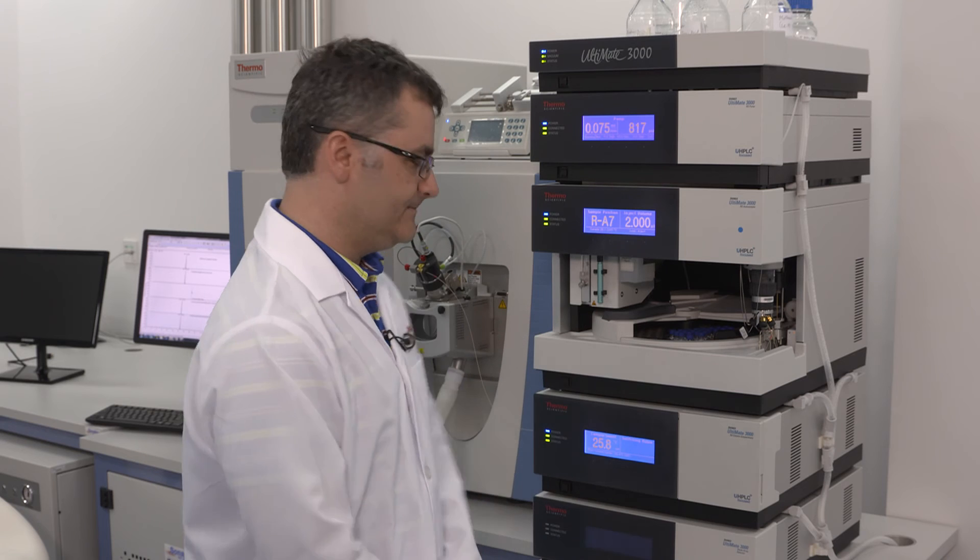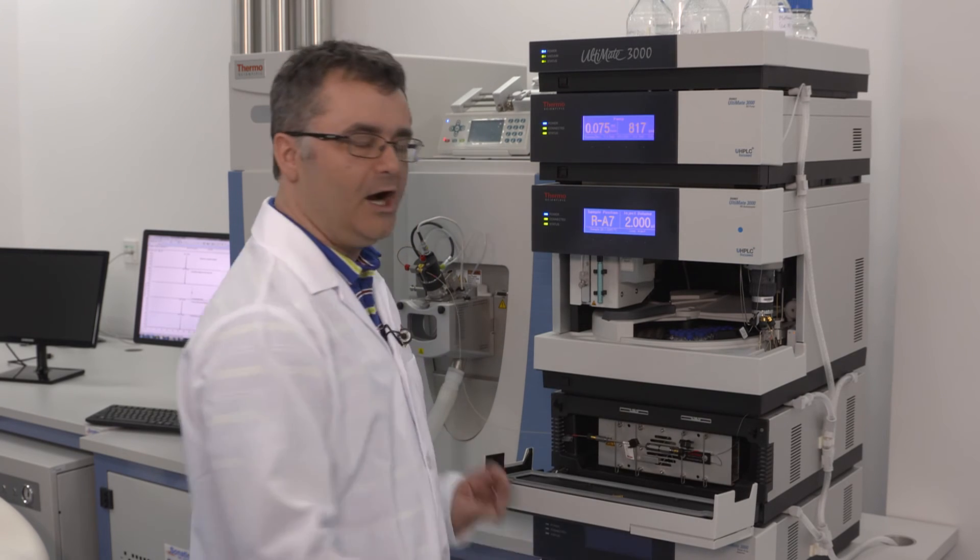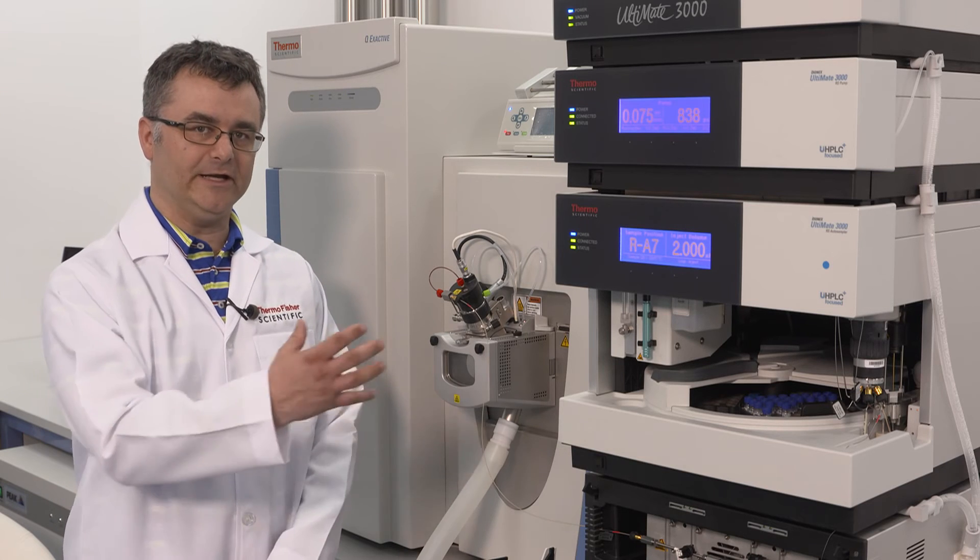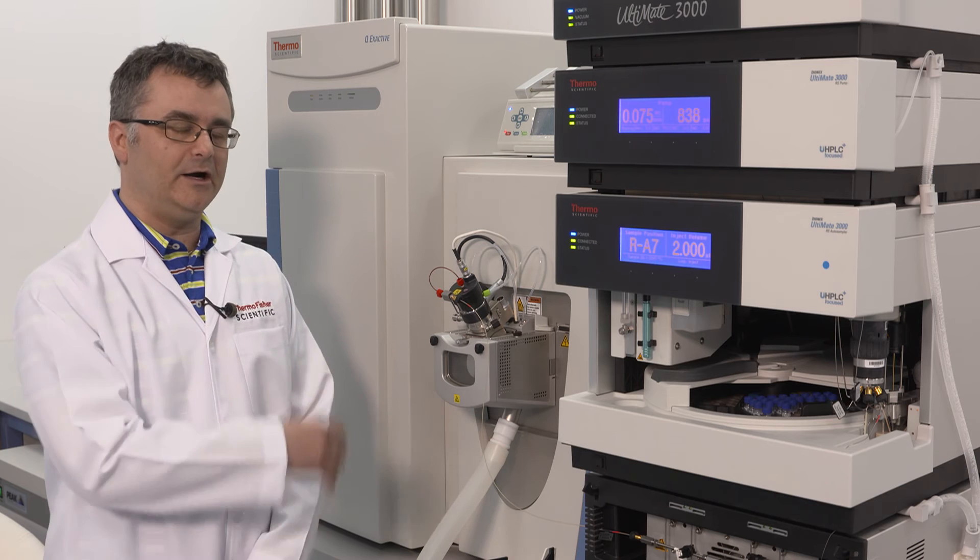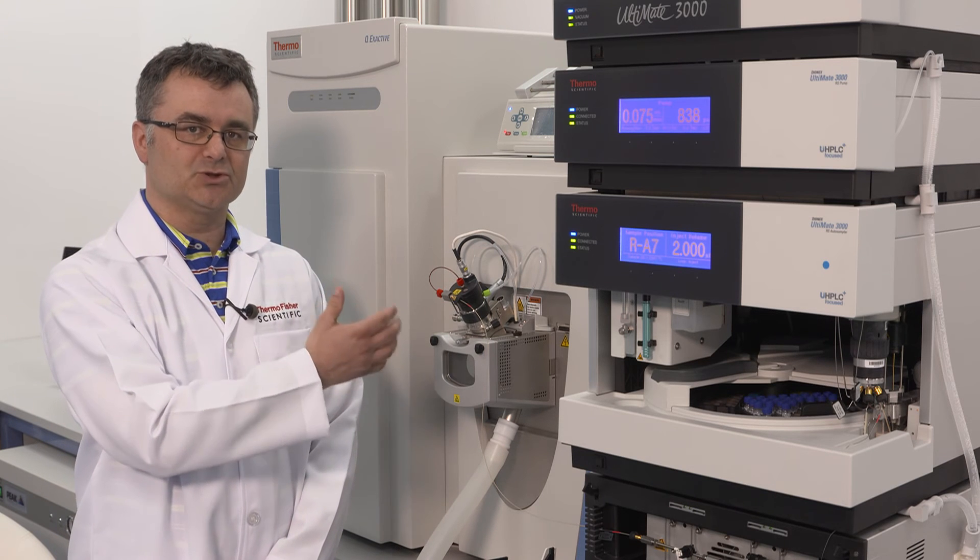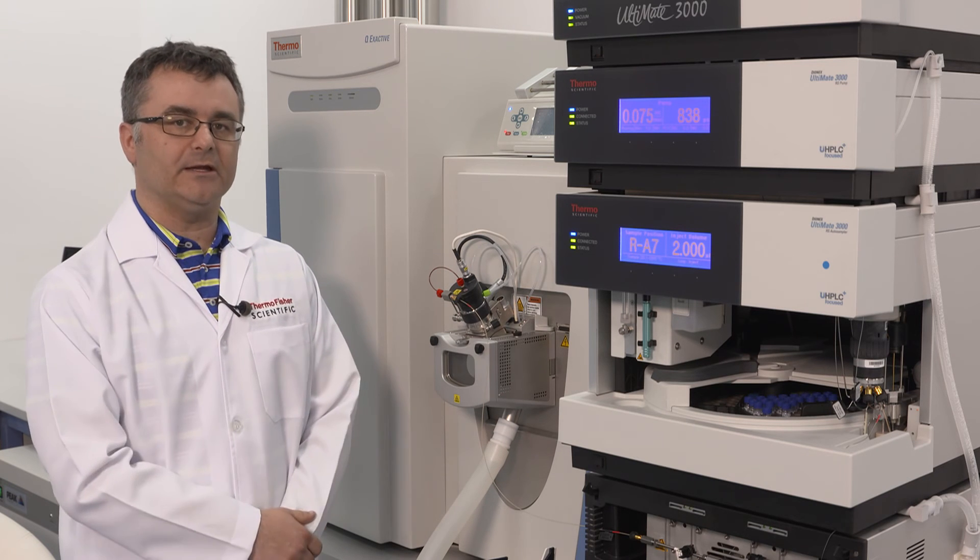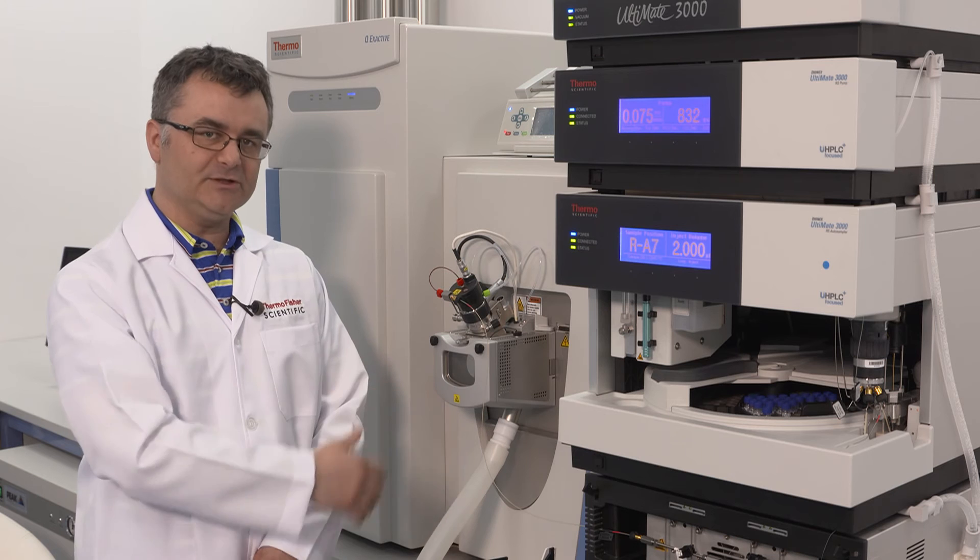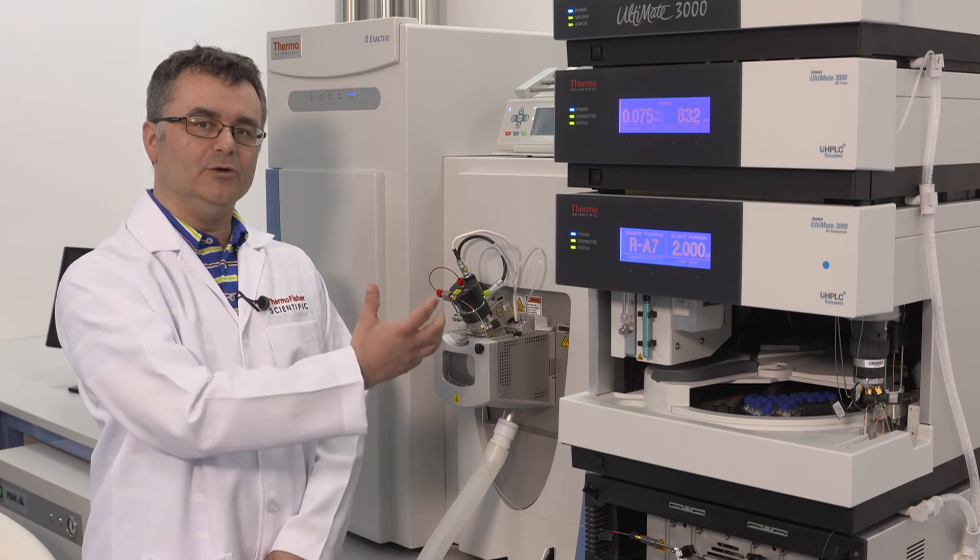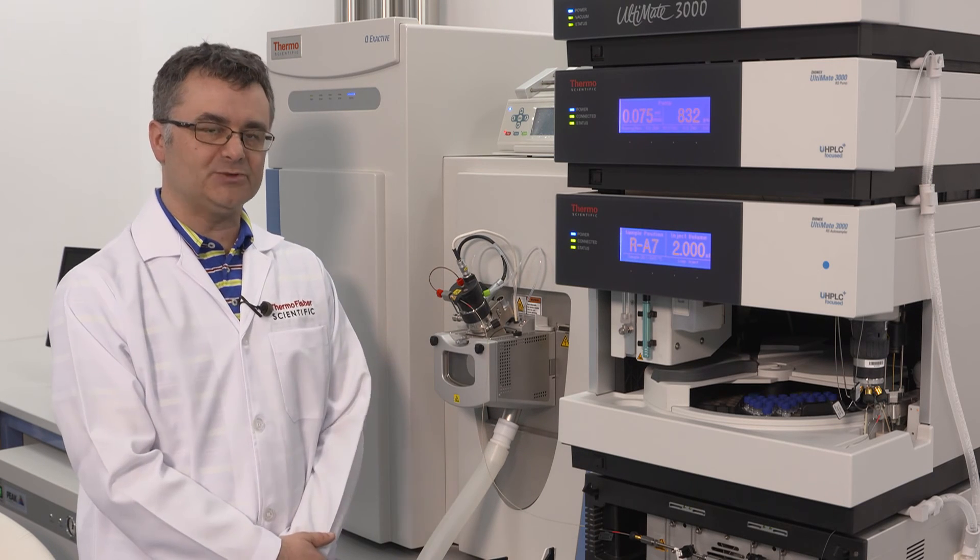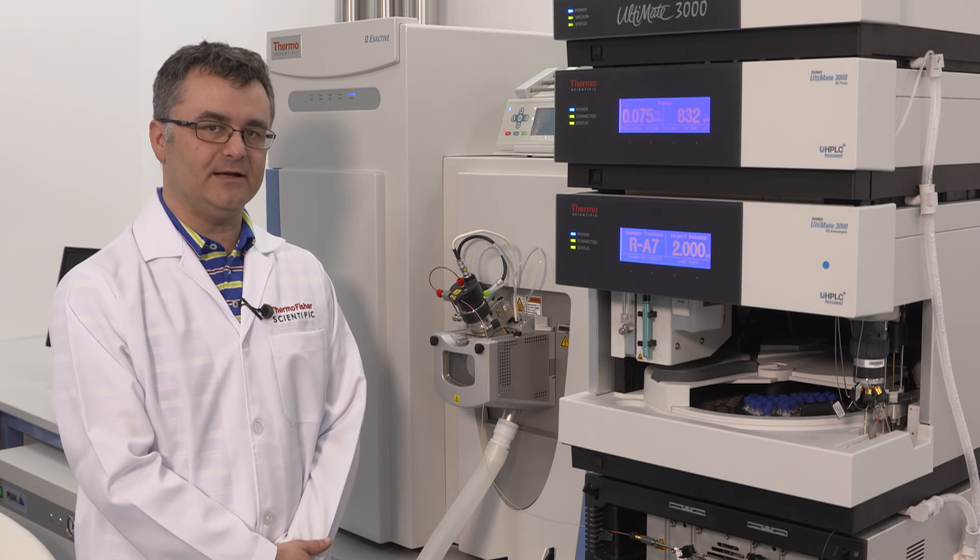Two microliters of the sample are injected. Peptides are separated onto a C8 biobasic column using a 30-minute gradient. Tryptic peptides that are eluting from the column are ionized using an electrospray source and then transported into the mass spectrometer. The precursor ion will be filtered with a quadrupole and then will be brought to the Orbitrap region for high resolution analysis.